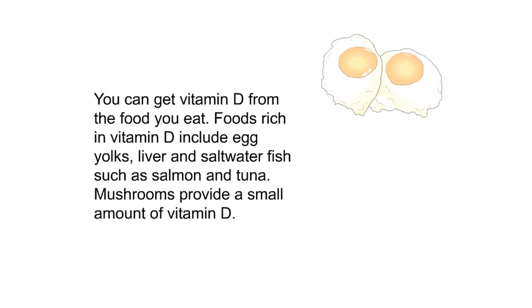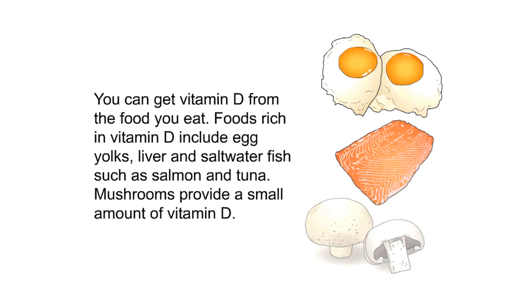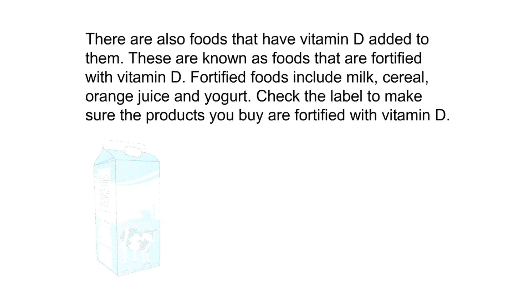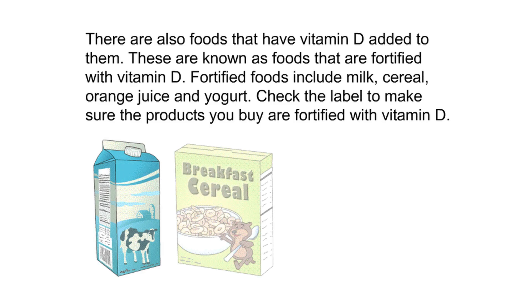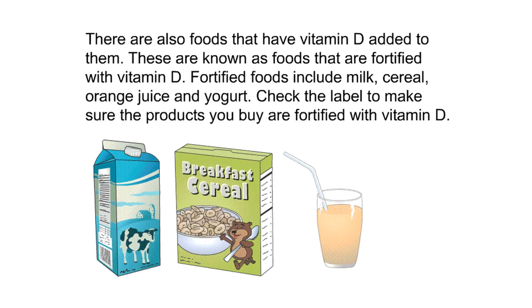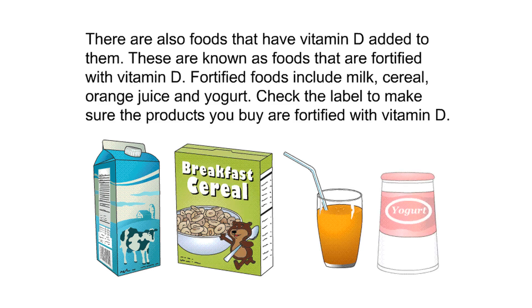You can get vitamin D from the food you eat. Foods rich in vitamin D include egg yolks, liver, and saltwater fish such as salmon and tuna. Mushrooms provide a small amount of vitamin D. There are also foods that have vitamin D added to them, known as fortified foods, which include milk, cereal, orange juice, and yogurt. Check the label to make sure the products you buy are fortified with vitamin D.